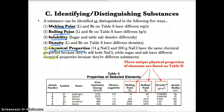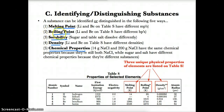These five properties are unique to each substance. If you change any of these five properties — melting point, boiling point, solubility, density, and chemical properties — you change what the substance is. They are all unique to a substance.